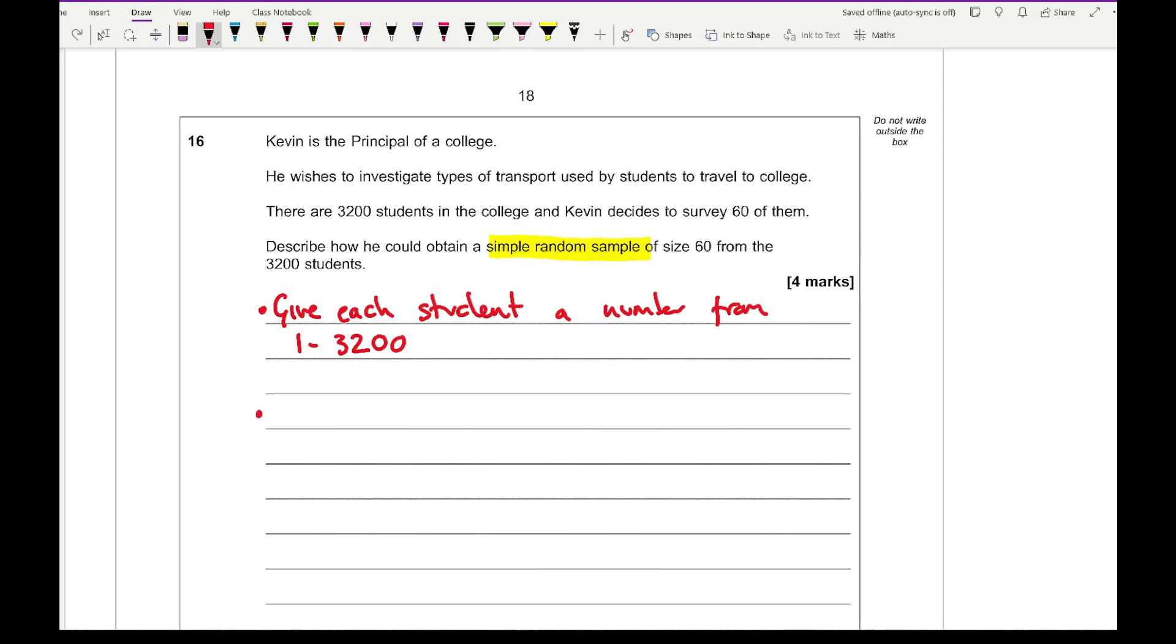The next thing we need to do is generate a random number using a calculator or computer program. You could give an example of how you would do this, you could use ran times 3,200. I wouldn't say you need to do that, but if you want to, that would be absolutely fine.